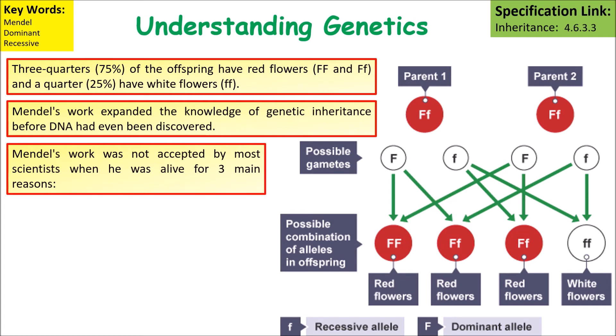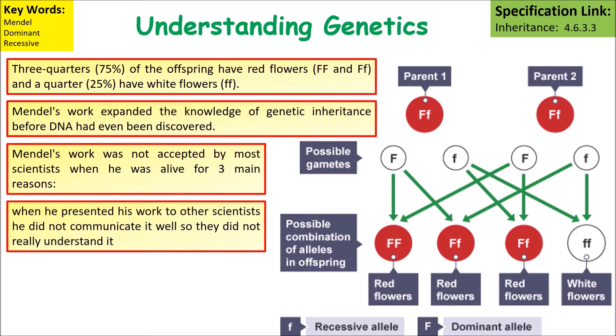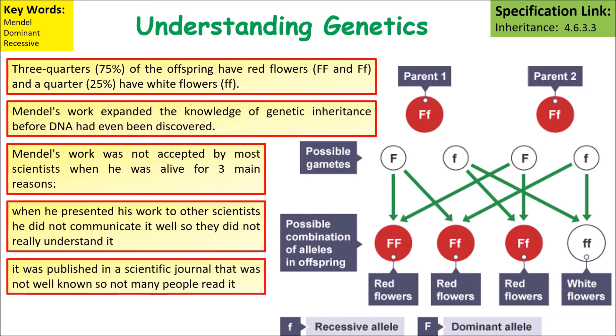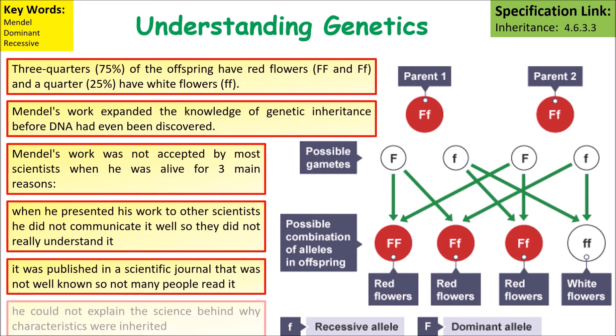Mendel's work was not accepted by most scientists when he was alive for three main reasons. When he presented his work to other scientists he did not communicate it particularly well so they didn't understand him. It was only published in a scientific journal that was not widely read. And he could not explain the science behind why characteristics were being inherited because he didn't know what DNA was and they didn't know what genes were.